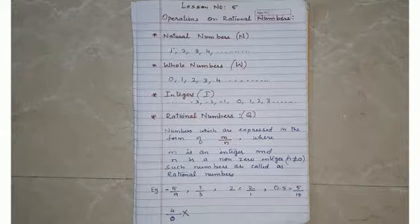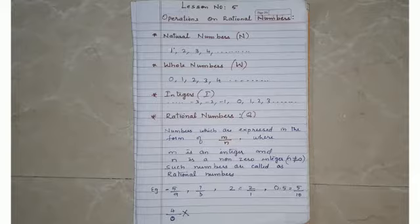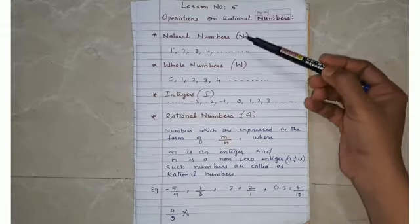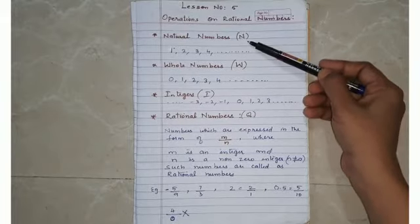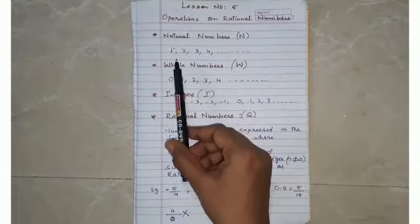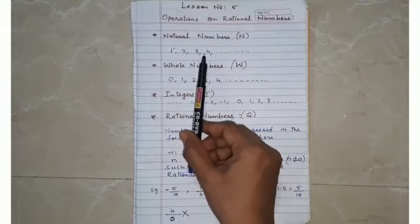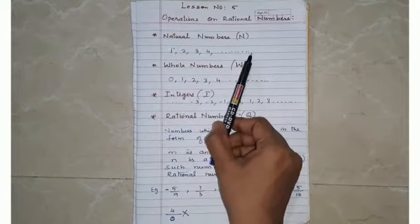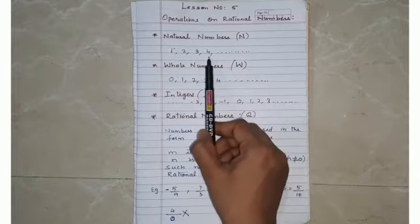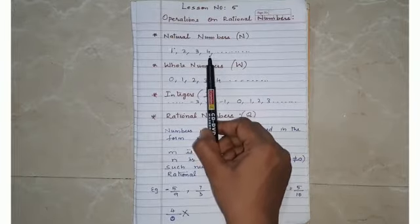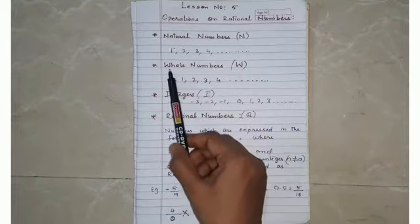Good morning students. Today in math we are starting with standard number five: operations on rational numbers. Before discussing rational numbers, let us first get to know what are natural numbers. Natural numbers are always represented as capital N and they start from 1, 2, 3, 4... These dots represent that we don't know where natural numbers are ending — they are endless.